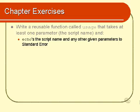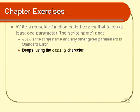It should echo that script's name plus any other given parameters that you specified out to standard error. It should actually beep, make a little bing noise, using the Ctrl-G character. I don't know if you remember how to do that, but it's pretty much just putting a Ctrl-G into the echo statement.